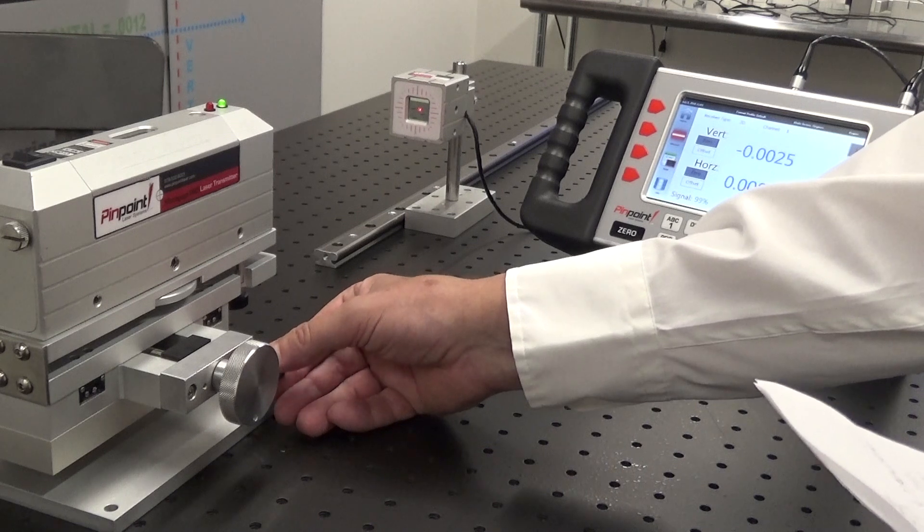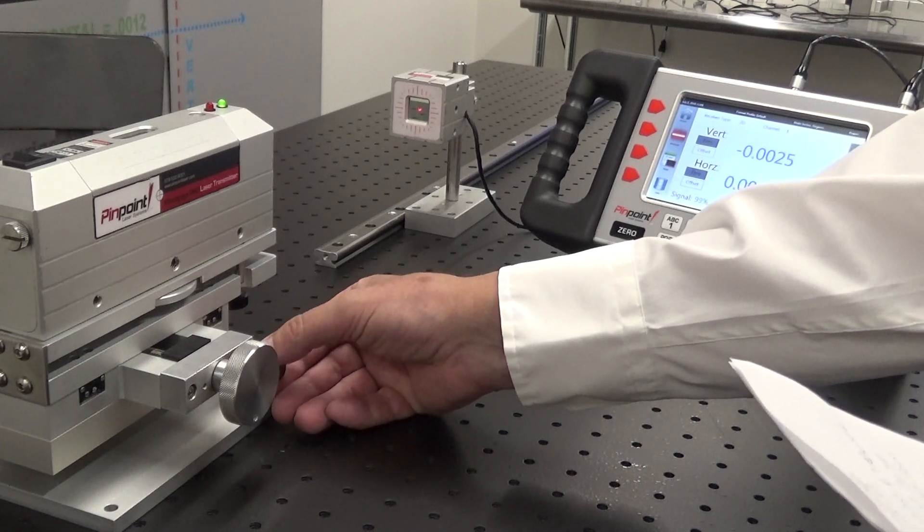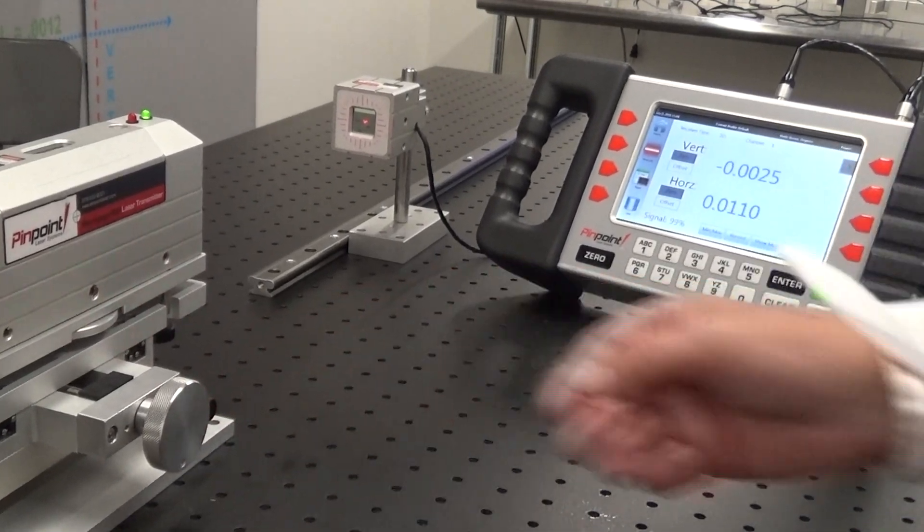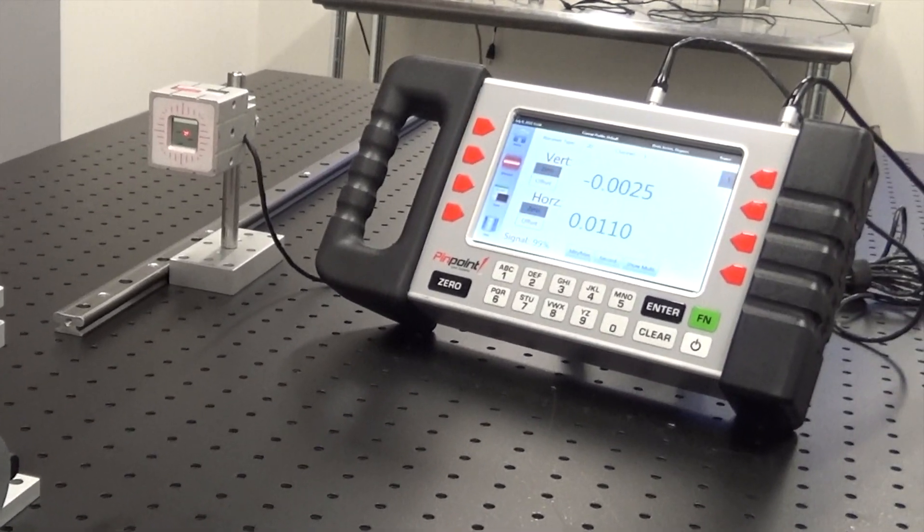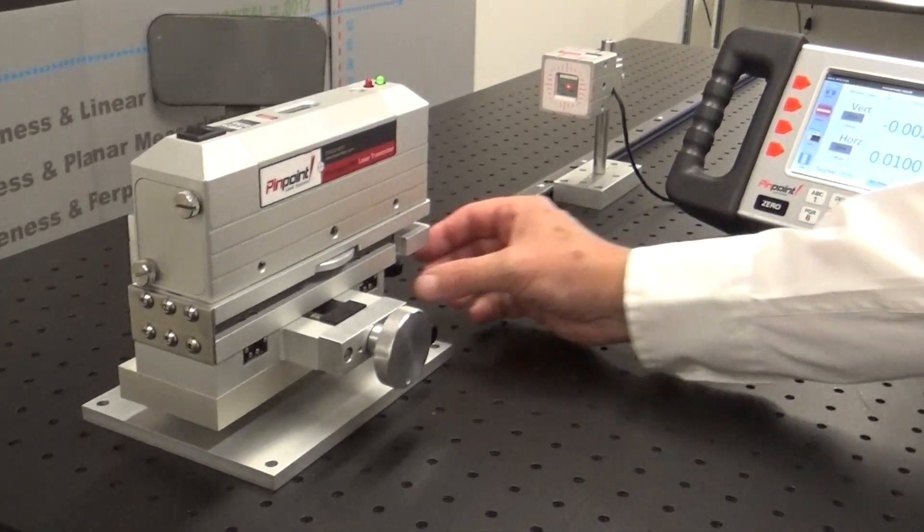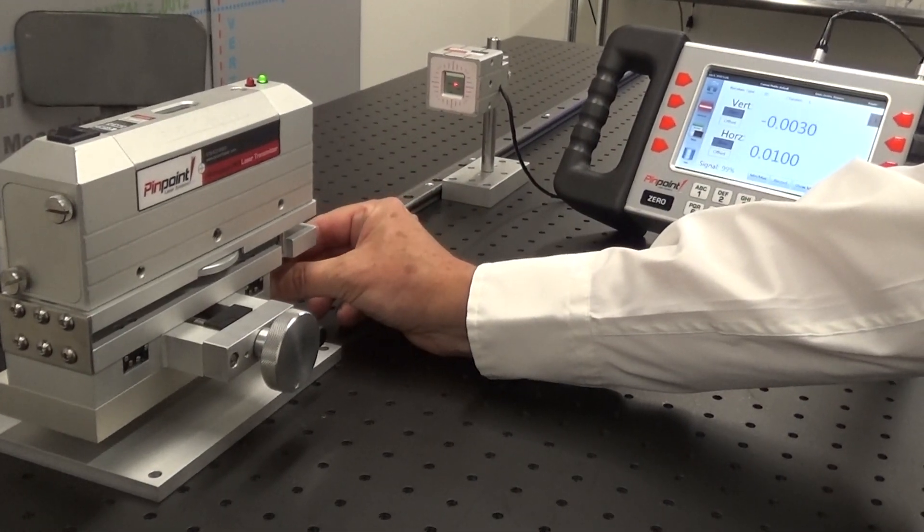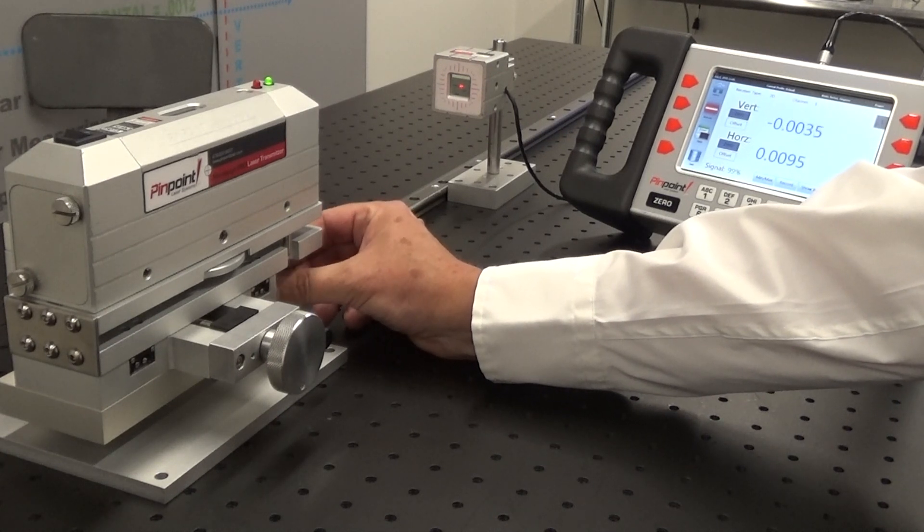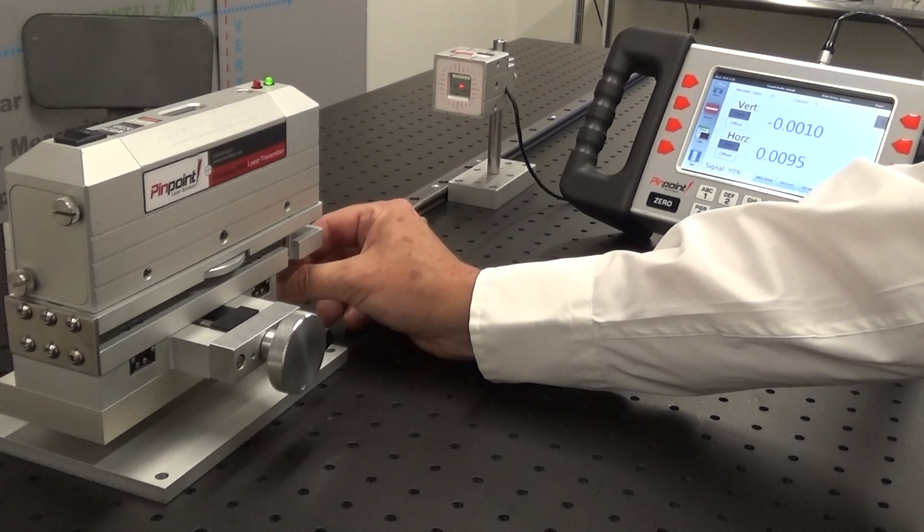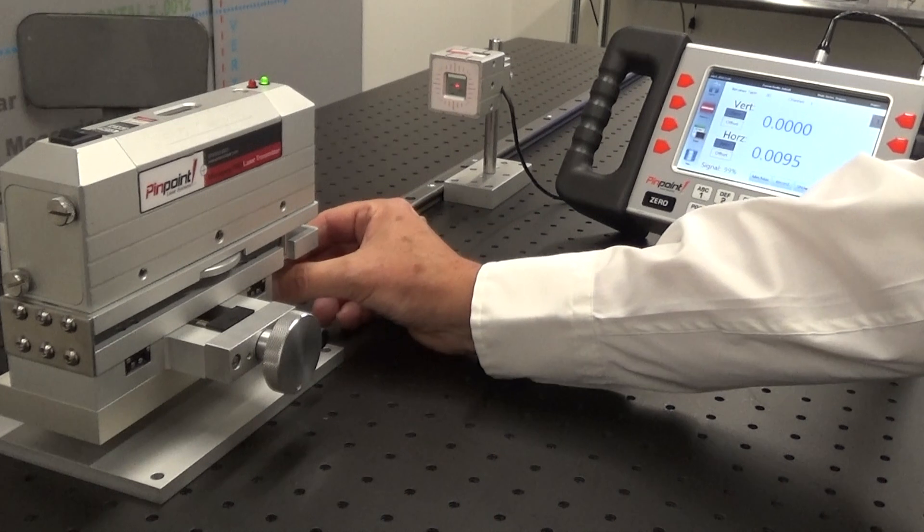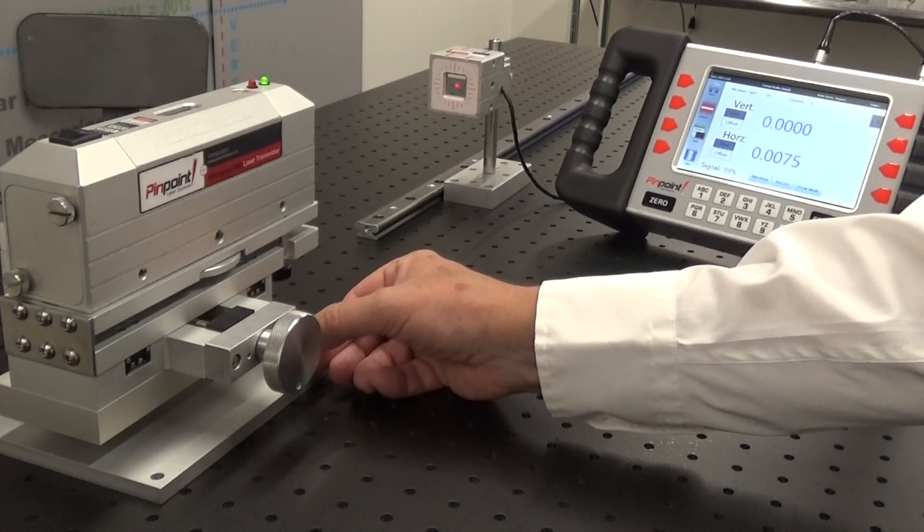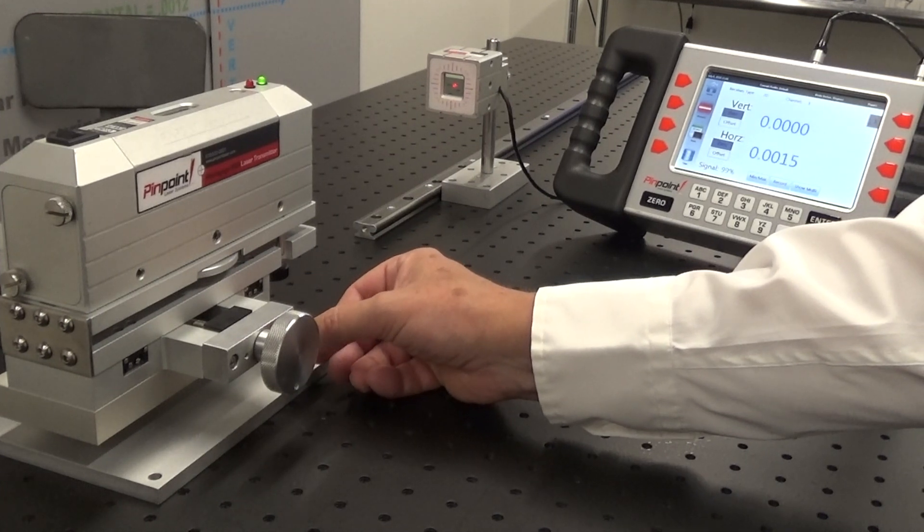Now that that's complete, we can repeat the process and then fine tune it to get to zero. For this demonstration, the second procedure has already been accomplished, which is why we have the readings so very close. We will go ahead and zero out each location. And then we will be ready to evaluate our straightness.